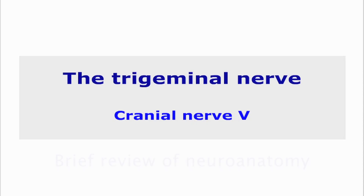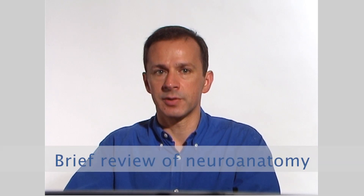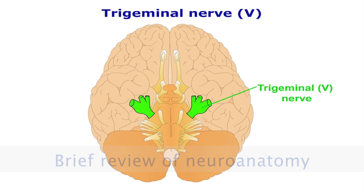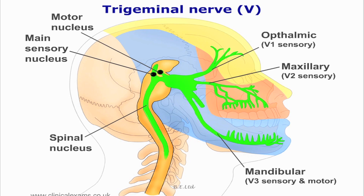Cranial nerve 5, the trigeminal nerve. This is a large cranial nerve with both motor and sensory components. The motor nucleus is located between the midbrain and pons areas. The sensory nucleus arises from the midbrain and stretches down to the level of C2 in the cervical spine.